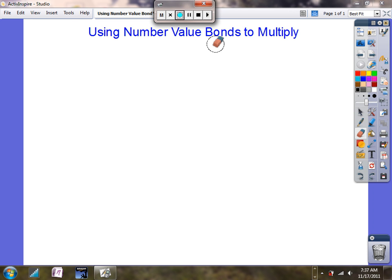Today I'm going to use number value bonds to multiply. I'm going to try to remember from when I learned about place value, and when I learned about place value, I looked at each digit in every number for which place it was in and how much it was worth, the value.